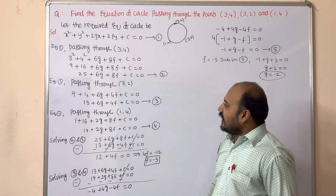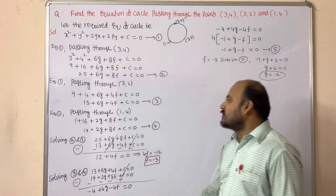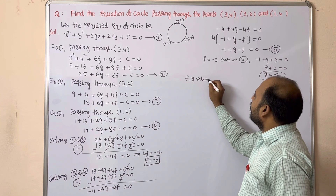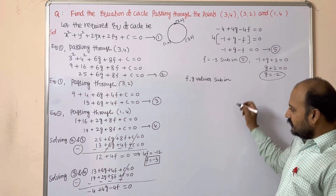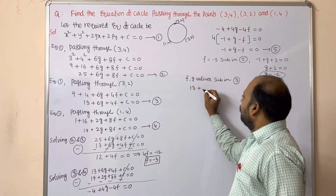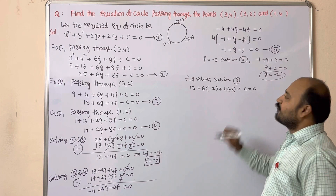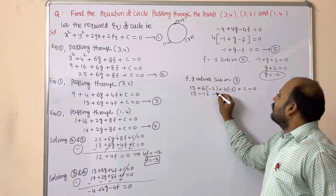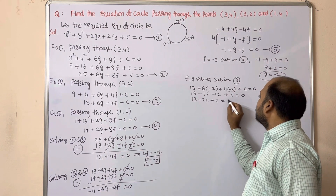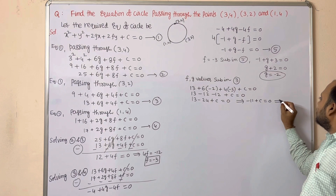With g = −2 and f = −3, substitute into Equation 3 to find c: 13 + 6(−2) + 4(−3) + c = 0, which gives 13 − 12 − 12 + c = 0, so 13 − 24 + c = 0, giving −11 + c = 0, therefore c = 11.